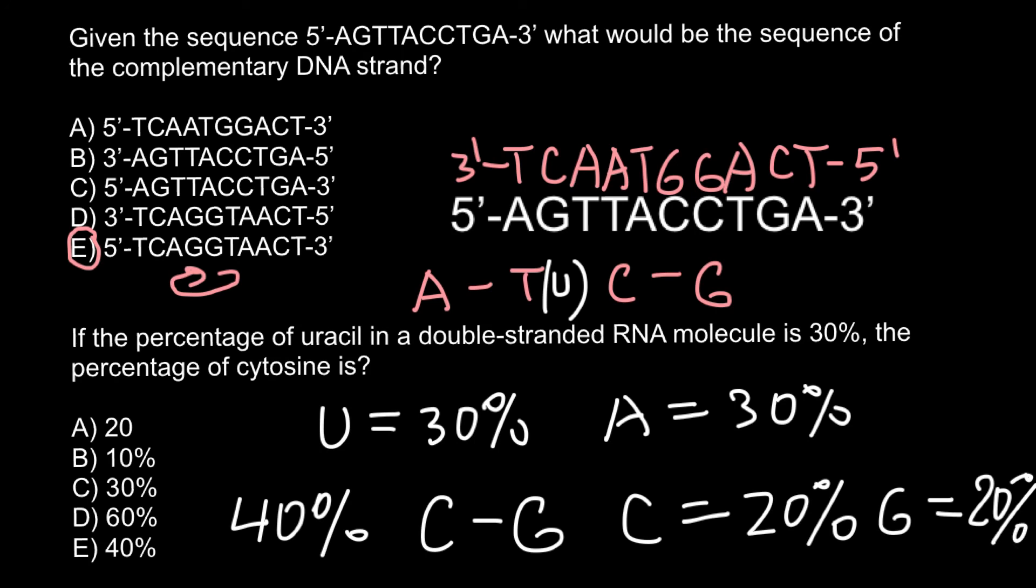So once again, if uracil makes 30%, then we are looking for percentage of cytosine. Cytosine would equal 20%, and this is answer A.